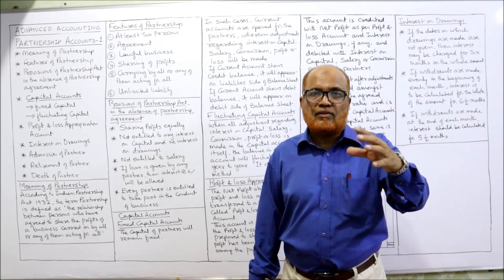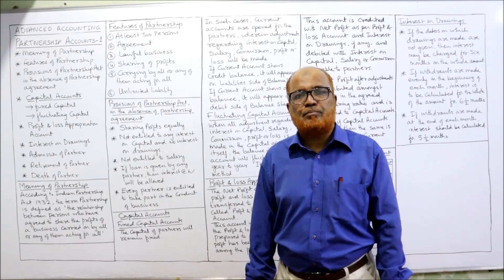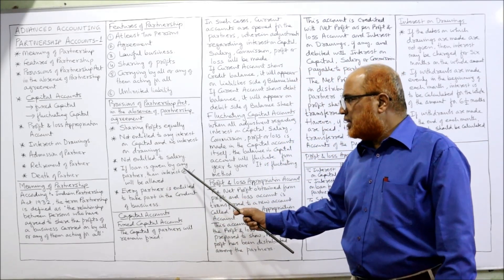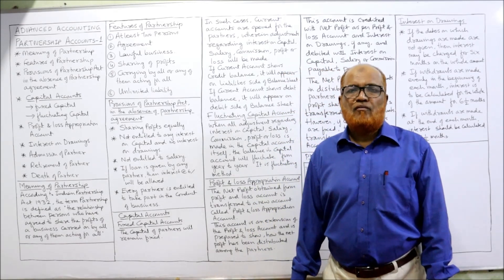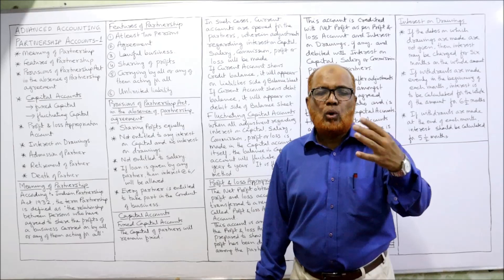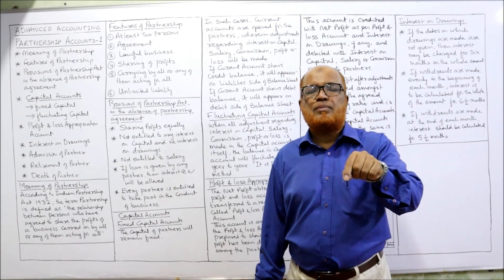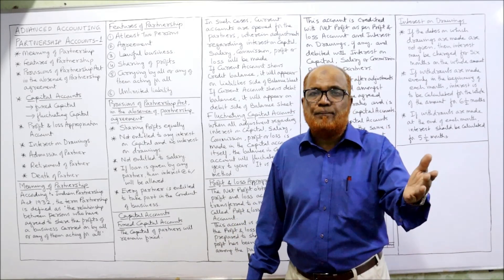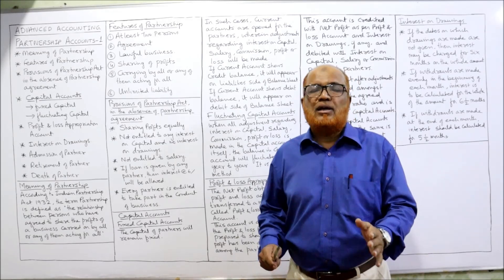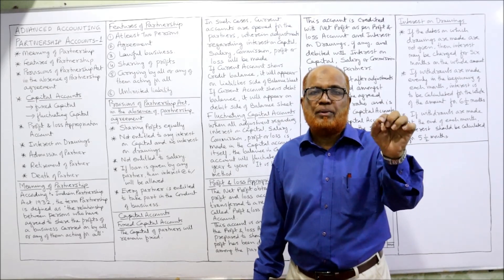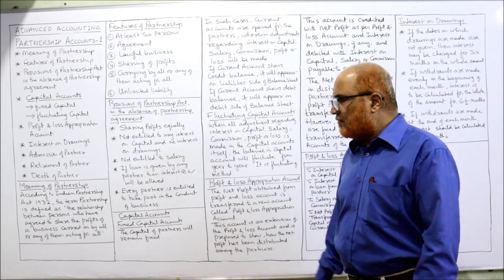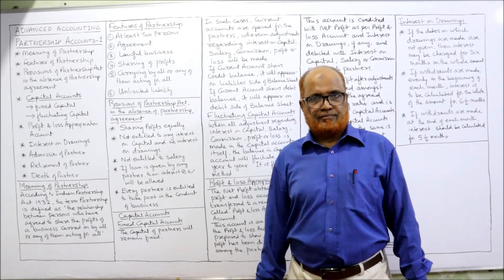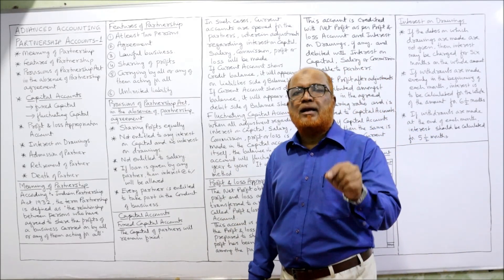If a partnership firm wants to pay salary to a partner, it should be mentioned in the partnership deed. Then, if a loan is given by any partner, interest at the rate of 6% per annum will be allowed on the loan. If a higher or lower rate is specified in the deed, then at that rate the interest on loan will be paid. But if the deed is silent, 6% interest will be given on the loan taken from the partner. Also, every partner is entitled to take part in the conduct of the business. These are the provisions of the Partnership Act which will be applied if the deed is silent.